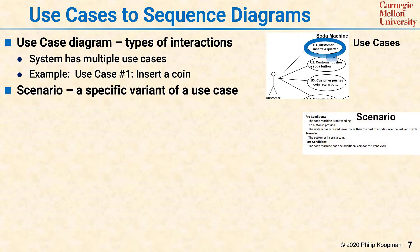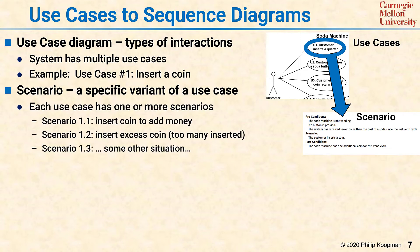For each use case, one or more scenarios are defined. A scenario is a specific variant of a use case that provides more detail. For example, you might have inserting a coin to add money, or there might be a use case where an extra coin beyond what is necessary is inserted. While that is not desired behavior, a customer might do it and the machine should do better than simply eating the coin. And there might be other scenarios as well, all of which have to do with inserting a coin into a soda machine.